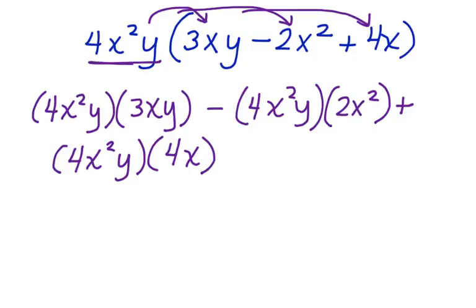Now you can see we've distributed this 4x squared y. It's here, it's here, and it's here. Now we can multiply each term. Let's start with this first one.